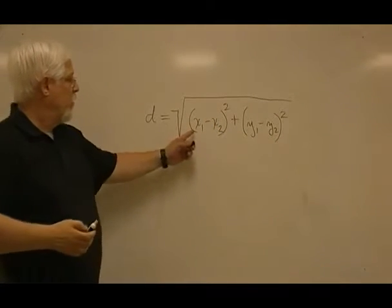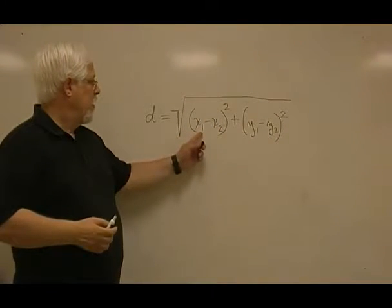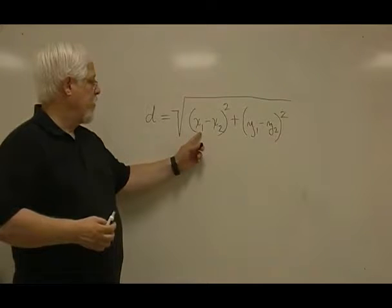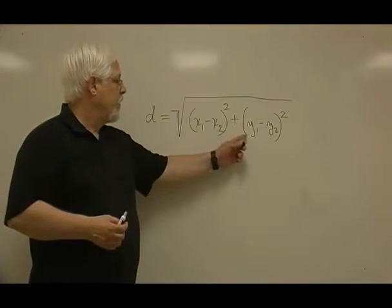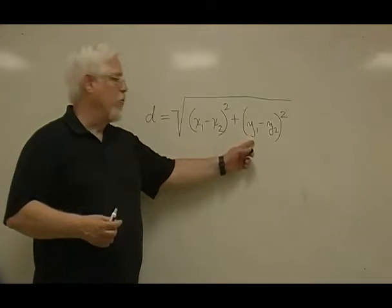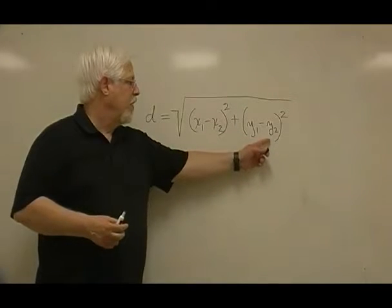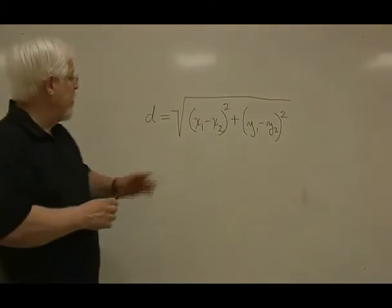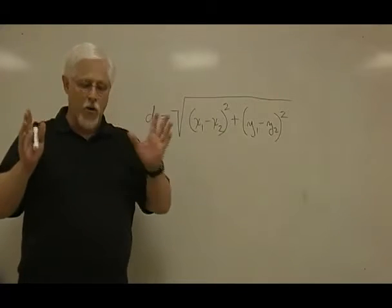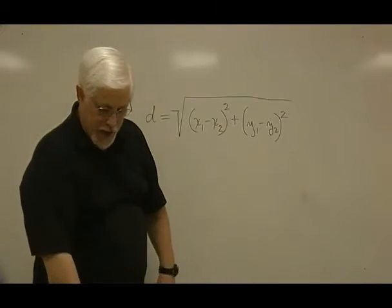Distance equal x of the first set of coordinates minus x of the second set of coordinates squared plus y of the first set of coordinates minus y of the second set of coordinates also squared. With this, we can find the distance between any two points on the coordinate plane.